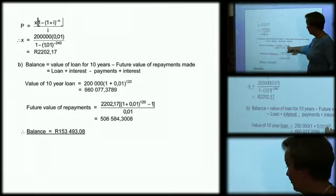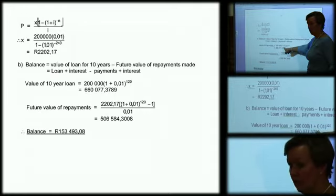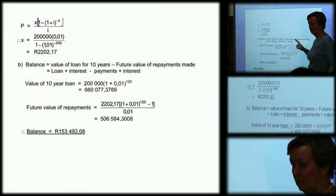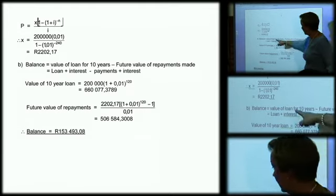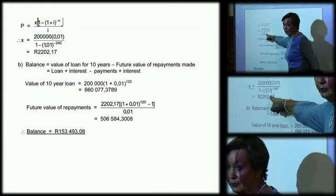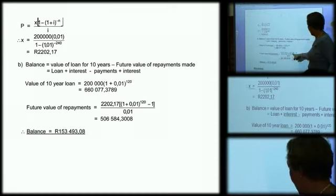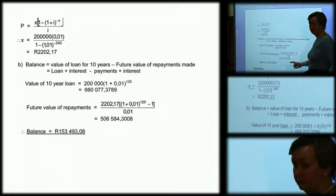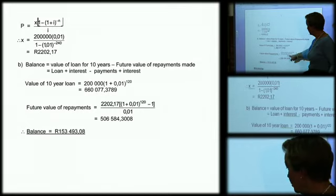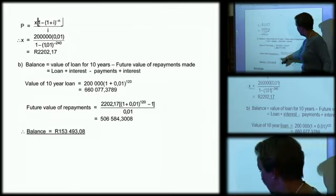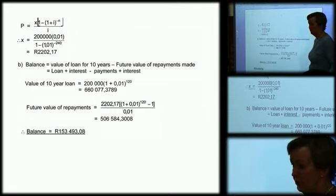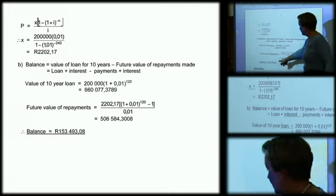How much has he paid back? He's paid back his X value every month. And it's 420 months. And that's your monthly interest rate. So he's actually paid back that amount. And so he still owes that.